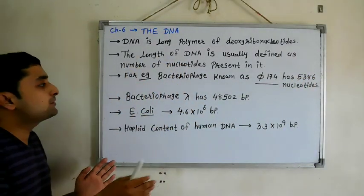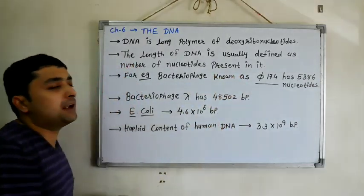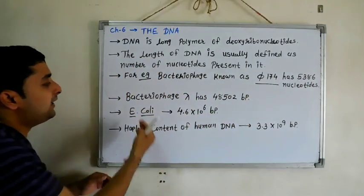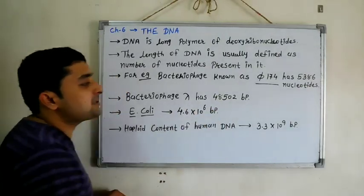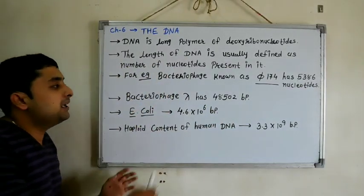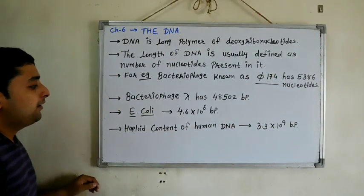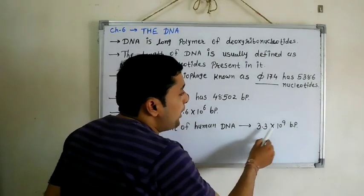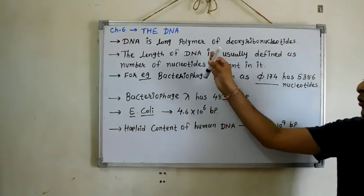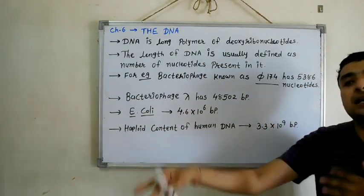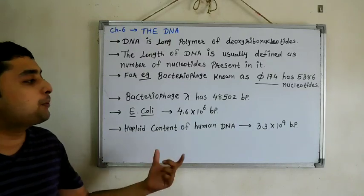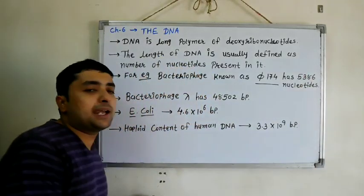E. coli has 4.6 times 10 to the 6 base pairs, whereas haploid content of human DNA has 3.3 times 10 to the 9 base pairs. That is, the length of human DNA is much larger compared to what we wrote above. Haploid content of human DNA has 3.3 times 10 to the 9 base pairs, whereas diploid has 6.6 times 10 to the 9 base pairs.